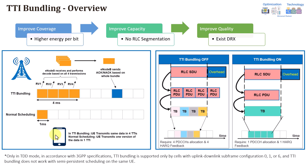The eNB will send an RRC configuration message to the UE, telling it that it is now in TTI bundling state, so it can start using TTI bundling scheduling. In general, how the scheduling of TTI bundling works: the same transport block that was transmitted once in normal scheduling will now be sent four times in four consecutive TTIs with different redundancy versions, but the same data is transmitted.